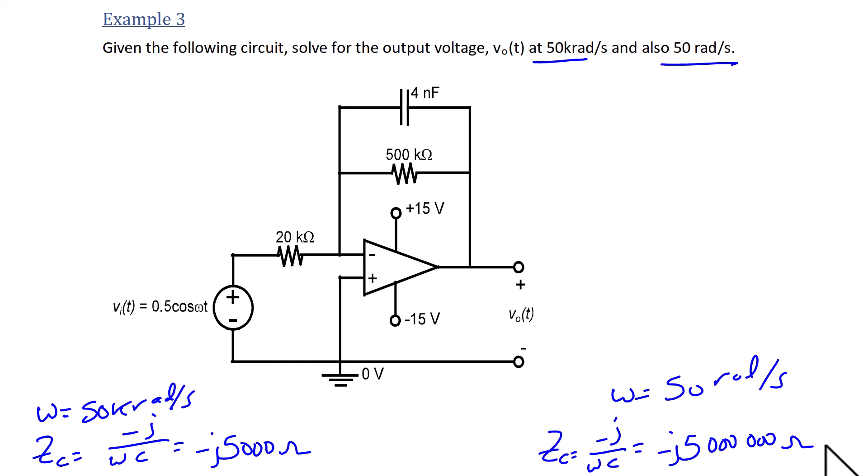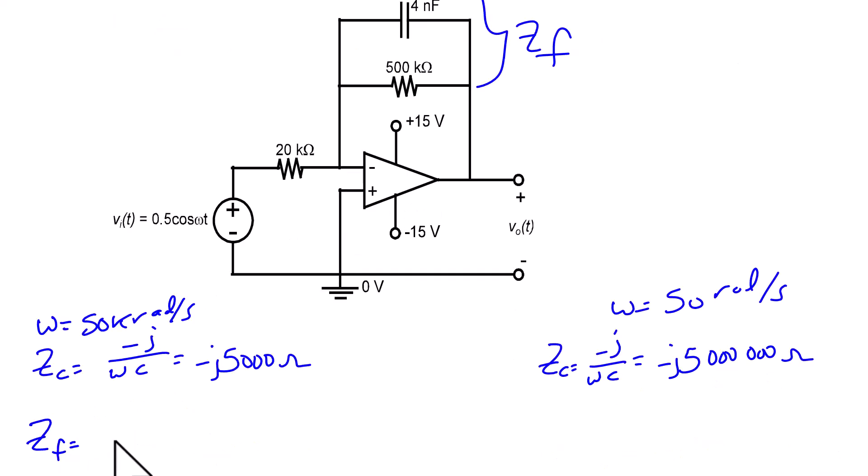So the feedback impedance is the resistor in parallel with the capacitor. So ZF is going to be 500k in parallel with negative j 5,000, which equals 49.995 minus j 49,499.5 ohms. Or the feedback impedance at 50 radians per second is 500k in parallel with negative j 5 million, which is 495,049.5 minus j 49,504.95.